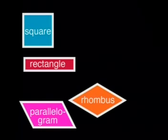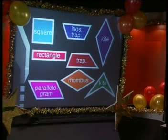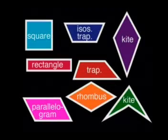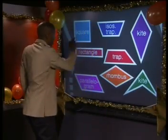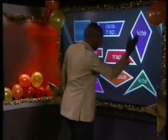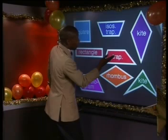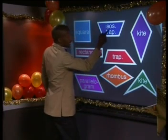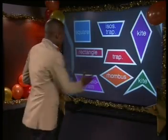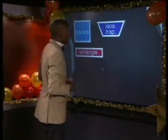Were you surprised that most of these shapes have diagonals bisecting each other? That is a useful thing to remember. Another question about the diagonals: which of these shapes have equal diagonals? It's true for the square and the rectangle, but not the parallelogram and the rhombus. It's not true for the kites or the regular trapezium, but it is true for the isosceles trapezium. So the answer is the square, the rectangle, and the isosceles trapezium.